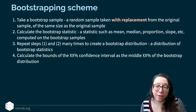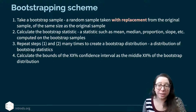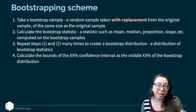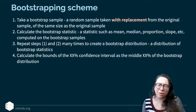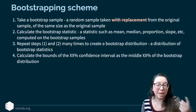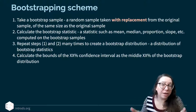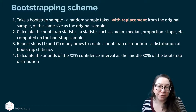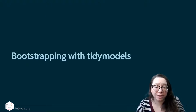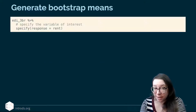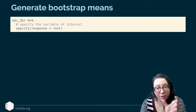To review our bootstrapping scheme: we take a bootstrap sample, which is a random sample taken with replacement from the original sample of the same size — in this case 15. We then calculate the bootstrap statistic we're interested in, which is the mean rent right now. We repeat these steps many many times to calculate many bootstrap means, and then we make a histogram and take the middle 95% to build our confidence interval. In tidymodels, we start with our data frame — that's the 'edi_3br' data frame — and specify our response variable, which is the rent column.